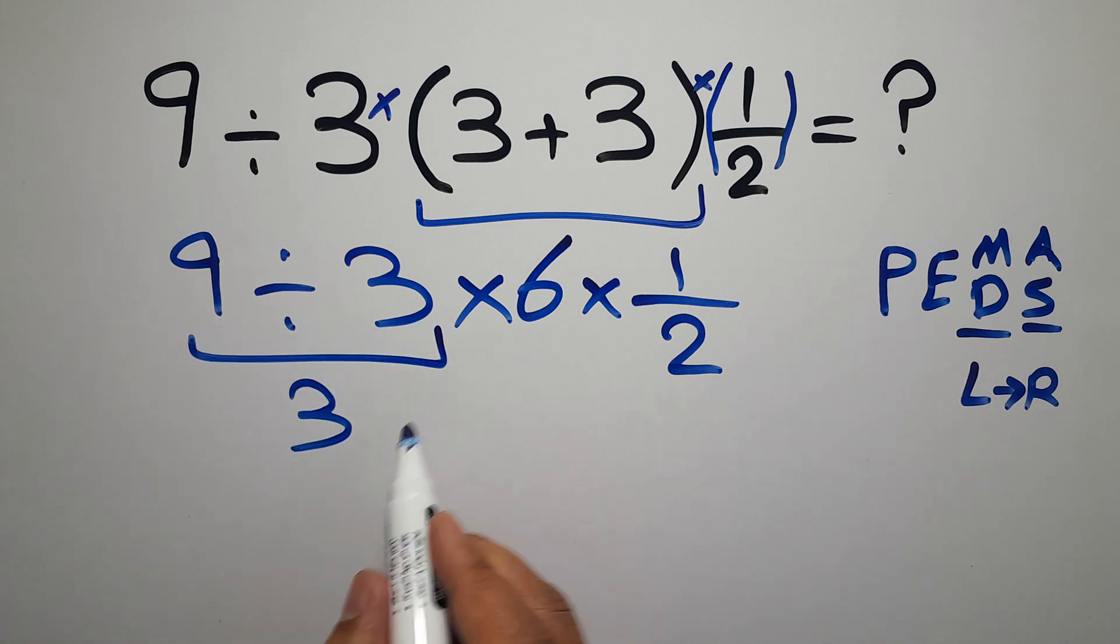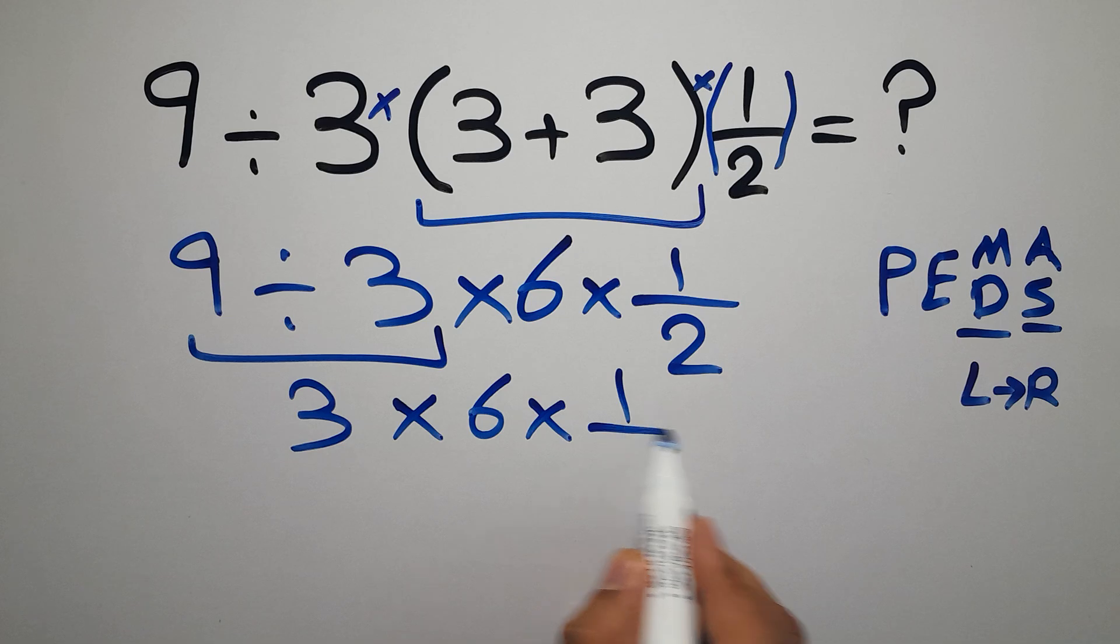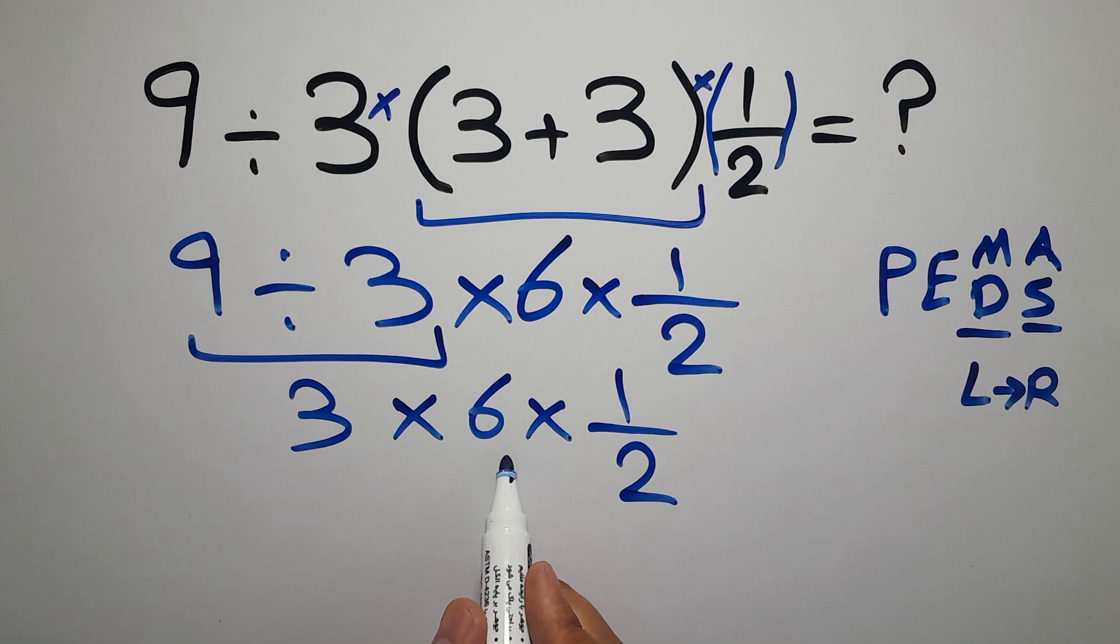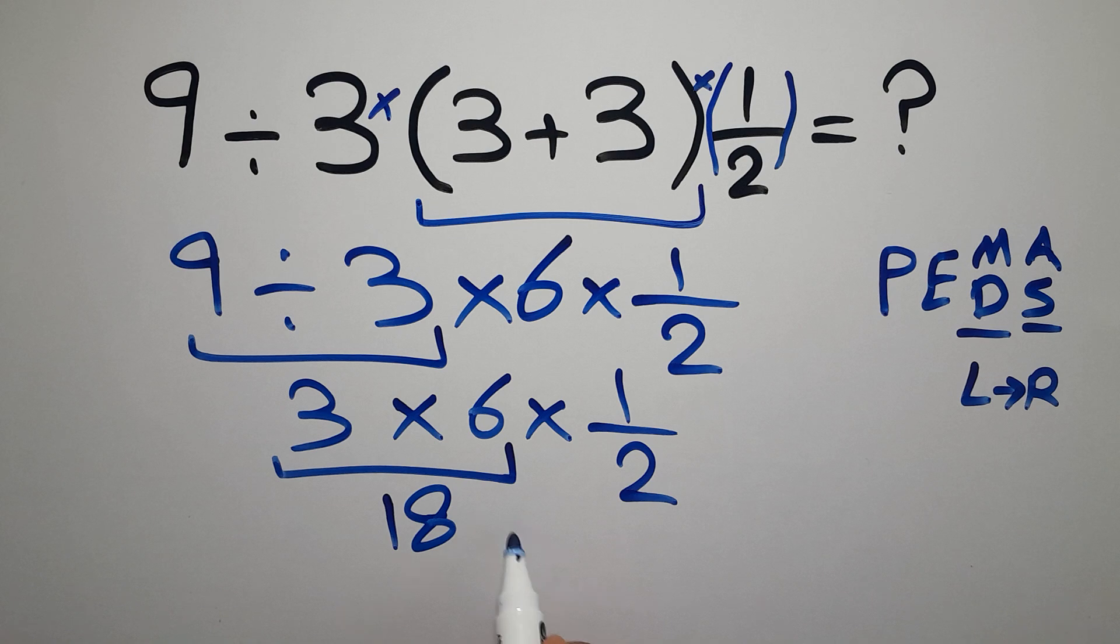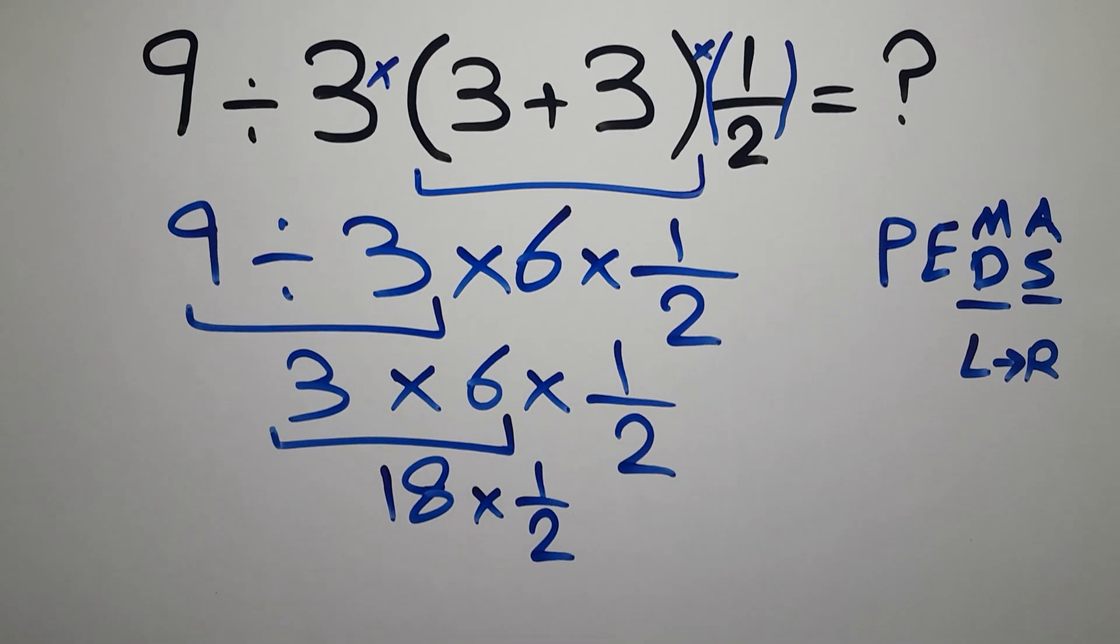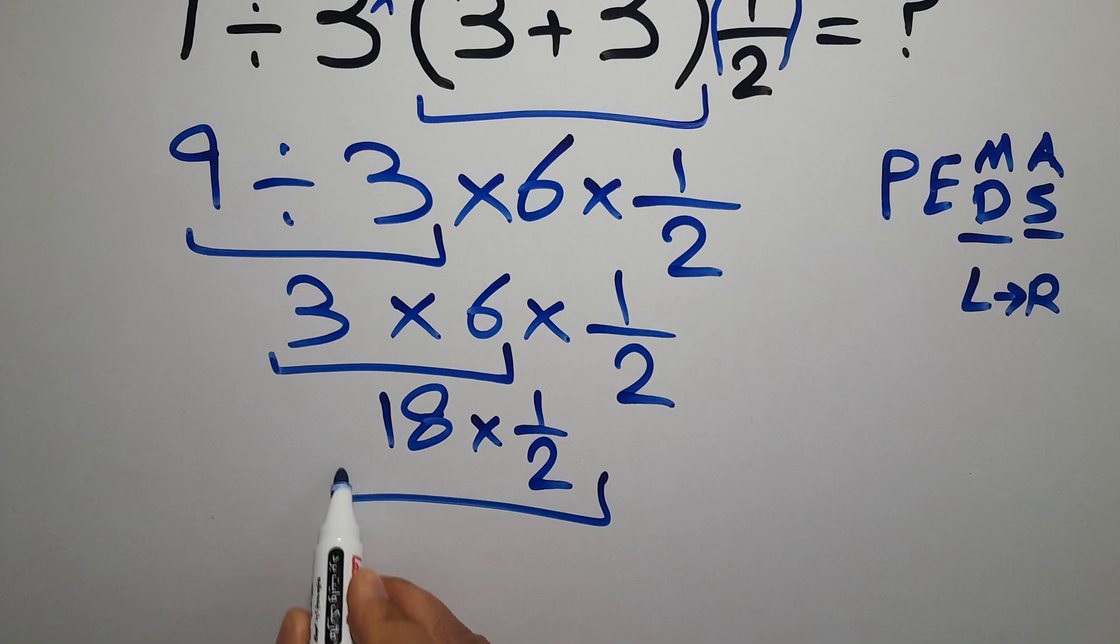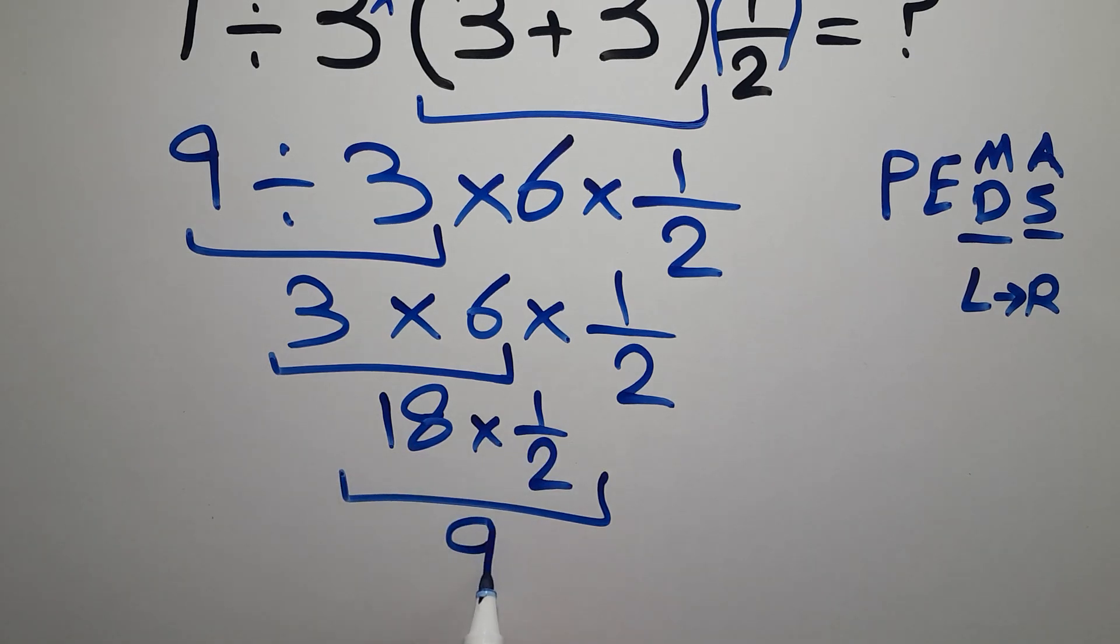So, 3 times 6 times 1 over 2. Now, we do this multiplication. 3 times 6 gives us 18. And 18 times 1 over 2, and this is equal to 18 divided by 2, which gives us just 9.